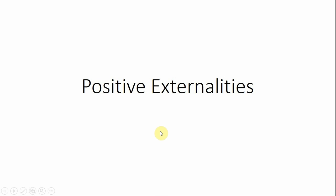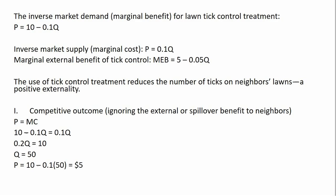Hello, in this video we're going to look at positive externalities. We'll start with an inverse market demand, which is nothing more than marginal benefit or the private marginal benefit, for lawn tick control treatment, and that's given by this equation.